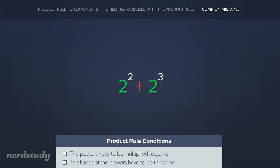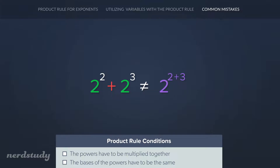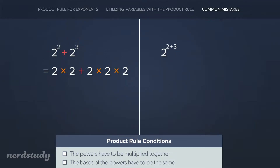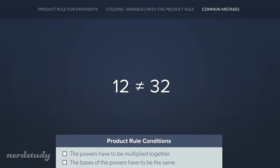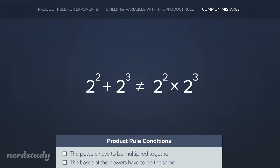To make things very clear: 2 to the exponent 2 plus 2 to the exponent 3 absolutely does not equal 2 to the exponent 2 plus 3. In fact, the latter is equivalent to 2 to the exponent 2 multiplied by 2 to the exponent 3. If we simplify the left side we get 2 times 2 plus 2 times 2 times 2, which equals 4 plus 8, which is 12. If we simplify the right side we get 2 times 2 times 2 times 2 times 2, which simplifies to 32. And of course 32 and 12 are not equal to each other. So adding powers together has nothing to do with multiplying powers together — as soon as you see two powers being added together, you cannot use the product rule.